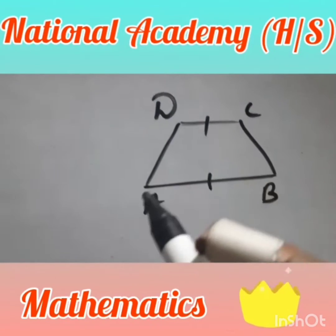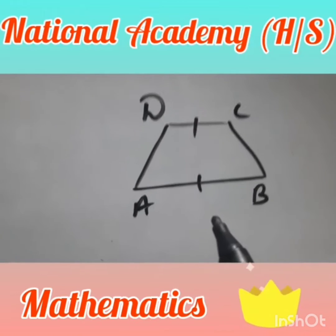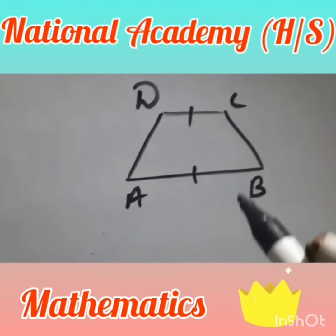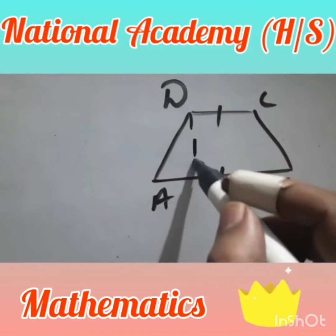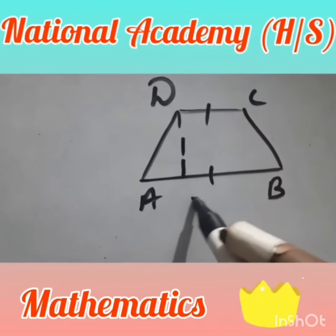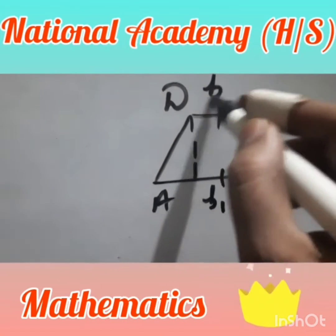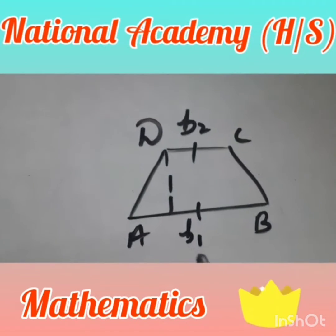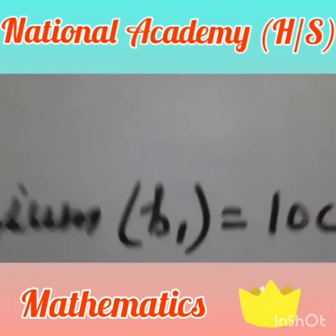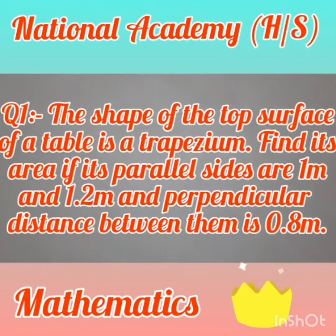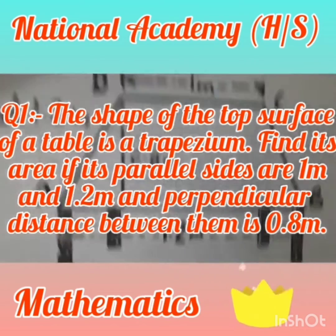A trapezium is a figure which has one pair of opposite sides parallel. The area of a trapezium is: half × (sum of parallel sides) × height, i.e., half × (B1 + B2) × H. Question 1: The shape of the top surface of a table is a trapezium. Find its area if the parallel sides are 1 meter and 1.2 meter, and the perpendicular distance between them is 0.8 meter.